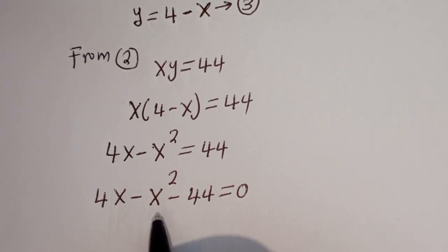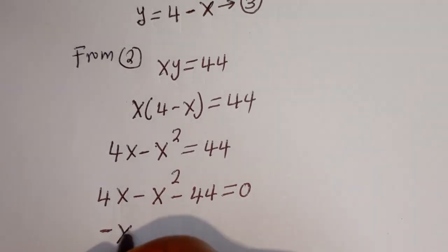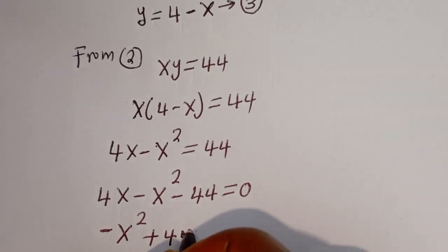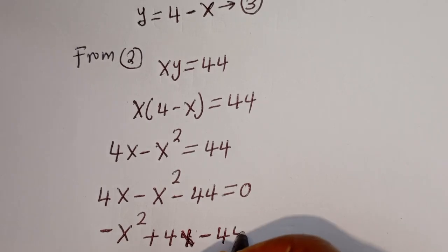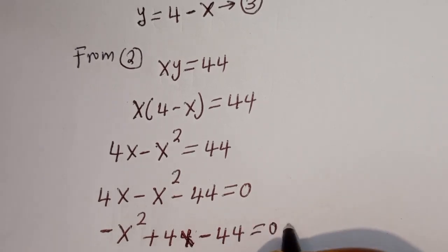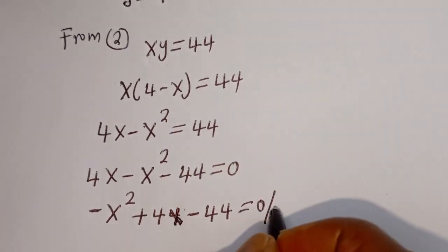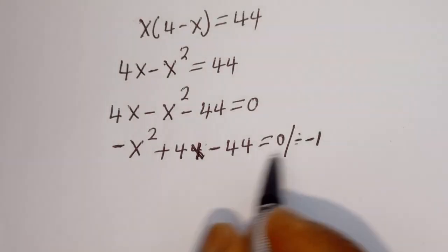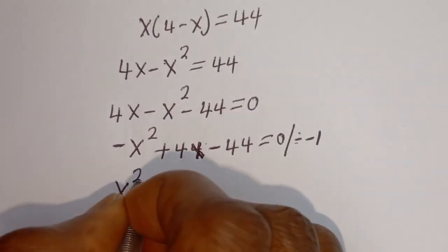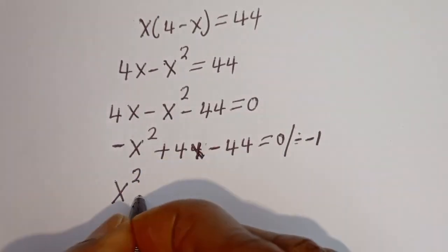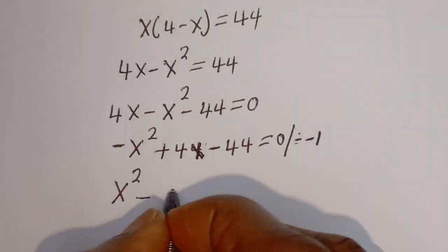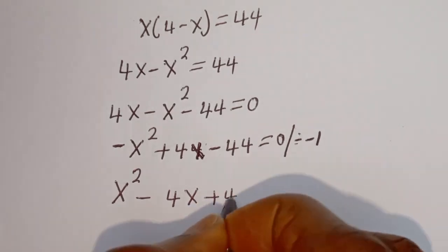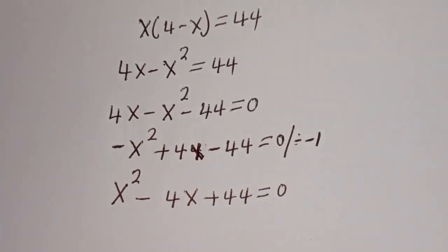Let's put this in standard form: we have minus x squared plus 4x minus 44 is equal to 0. Now let's divide all through by minus 1. We get x squared minus 4x plus 44 is equal to 0.